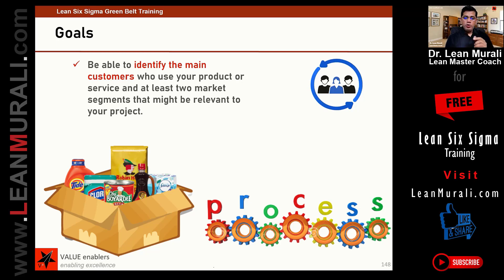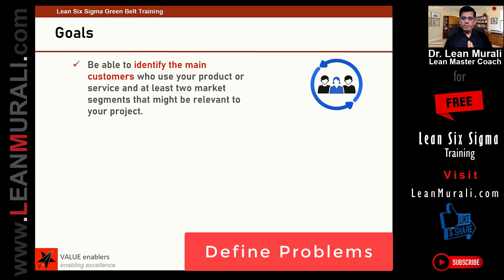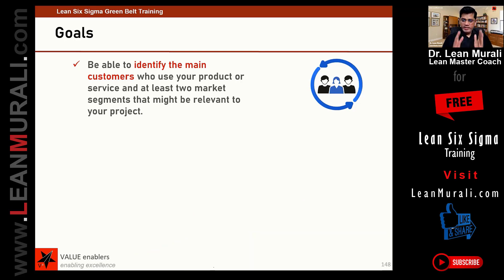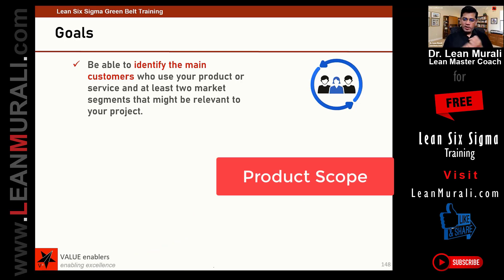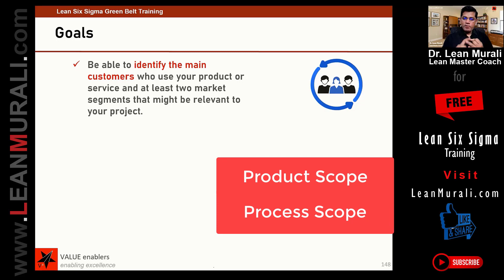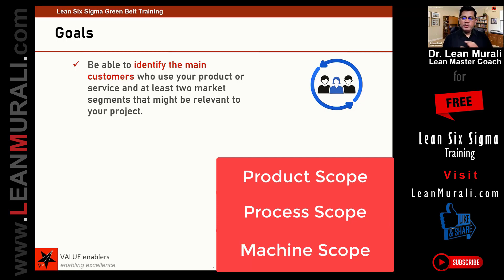You need to get into the process level, and then at the process level you need to define the problem and define the scope. In scope, we spoke about product scope, process scope, and machine scope.